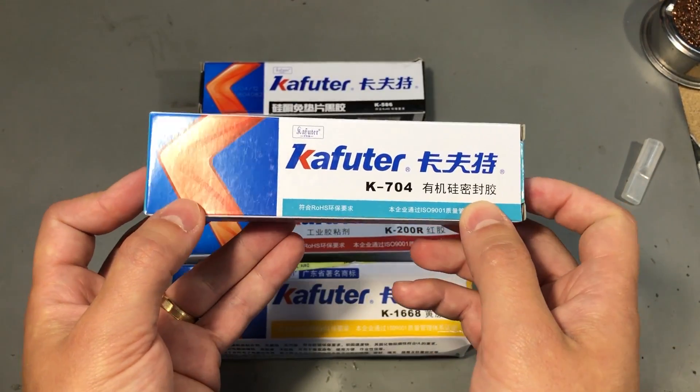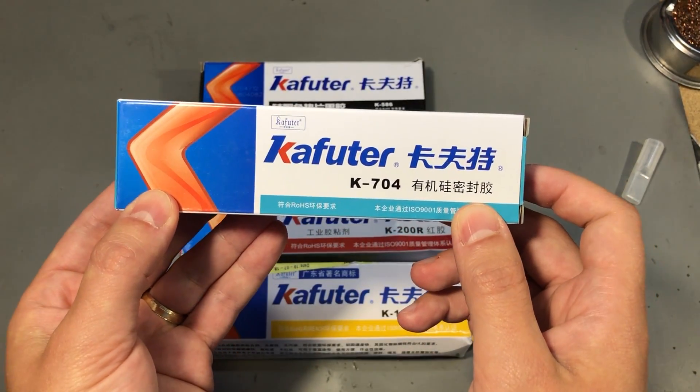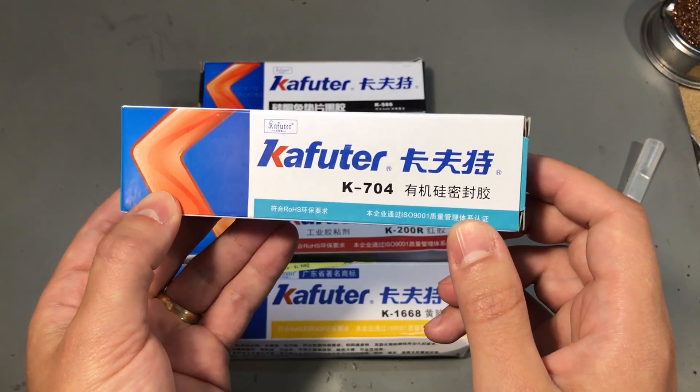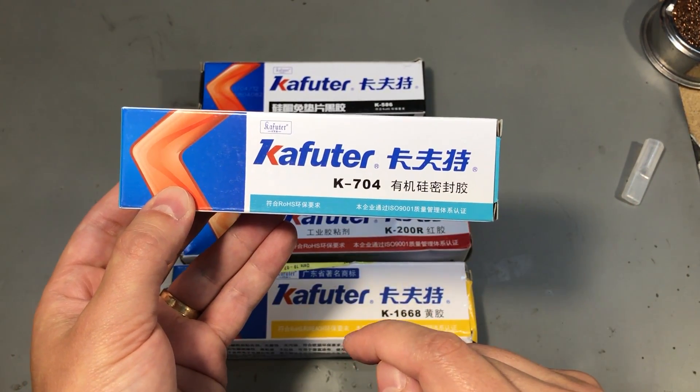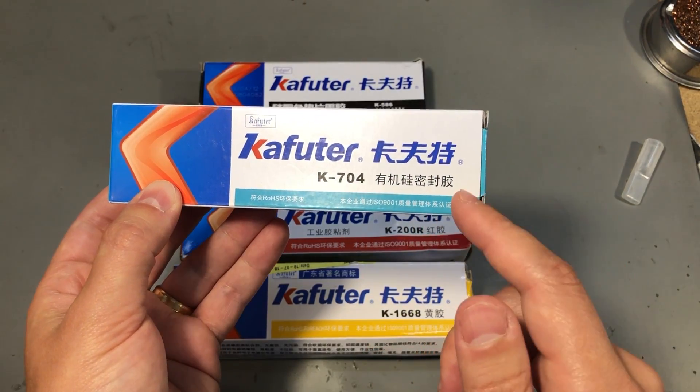The K704, this is a silicon sealant with a working temperature of minus 50 to plus 200 degrees Celsius and they recommend this for sealing against the moisture or arc prevention inside electrical equipment.